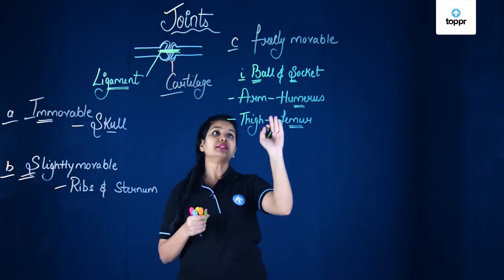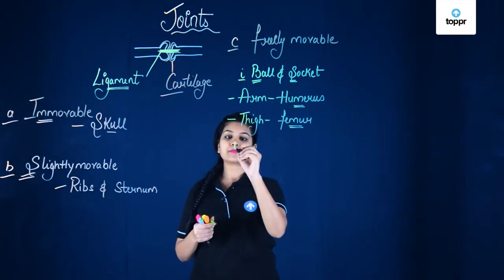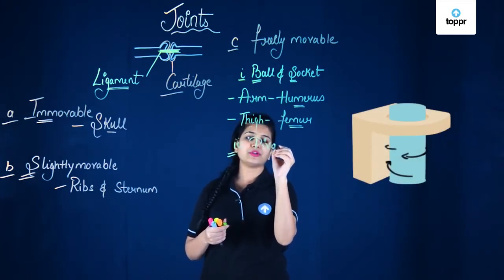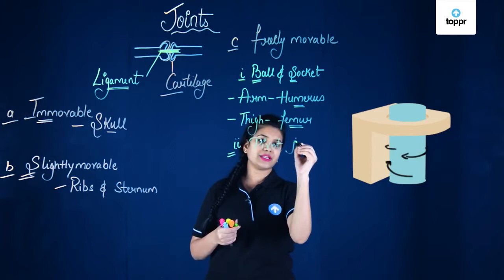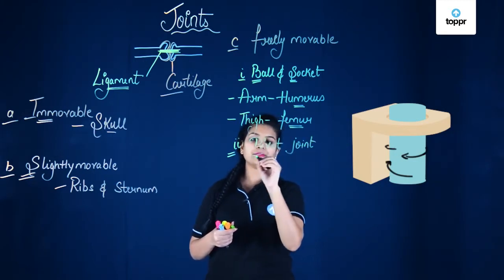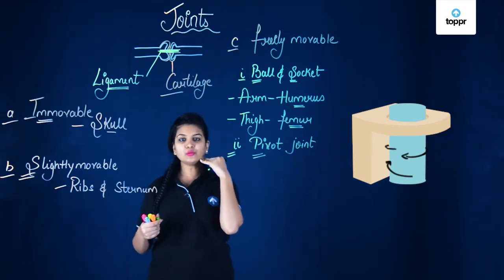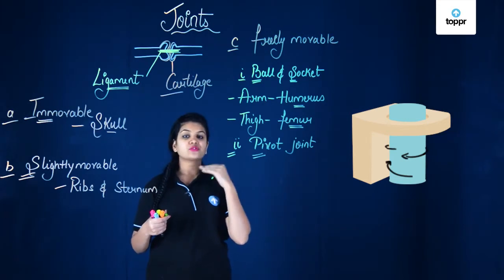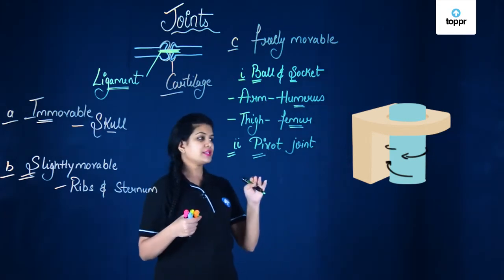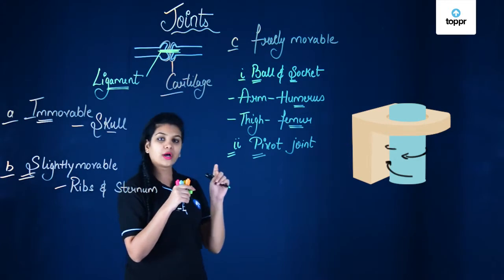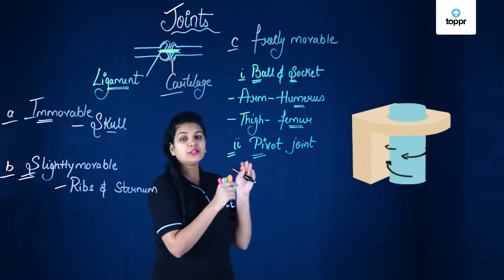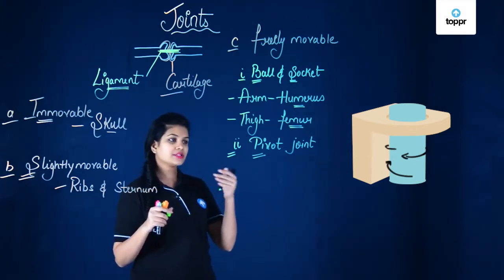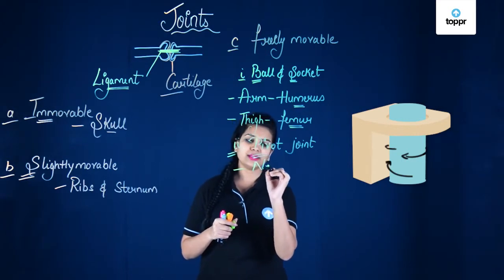The next type of joint under freely movable joints is called the pivot joint. Pivot joint is very similar to the ball and socket joint. It is found in the neck region — you can move your head to the front, back, and sides. The rounded part of one bone gets fitted into the dent of another bone. These two bones belong to the vertebrae, and this pivot joint is found in the neck.